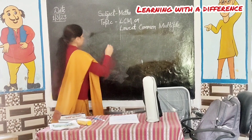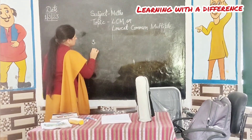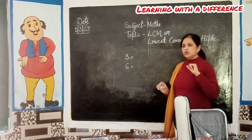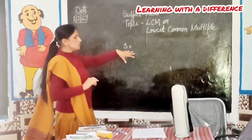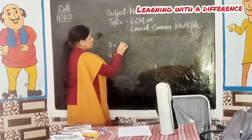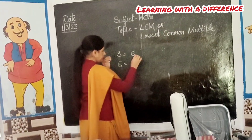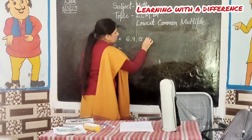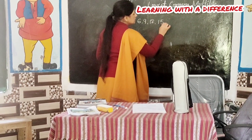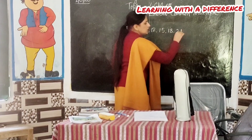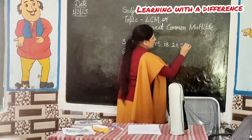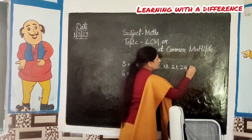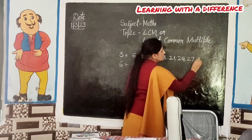Now it's the table of 3 and 6. You, stand up and tell me the multiples of 3. Yes — 3, 6. Very good. Speak loudly — 5, 15. 6, 18. 7, 21. Very good. 24. Yes, three. Very good.